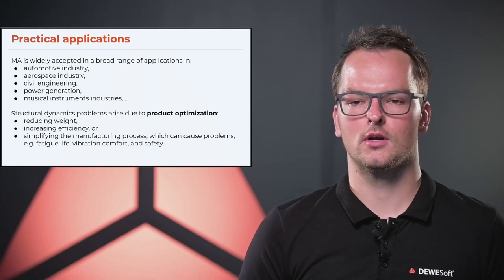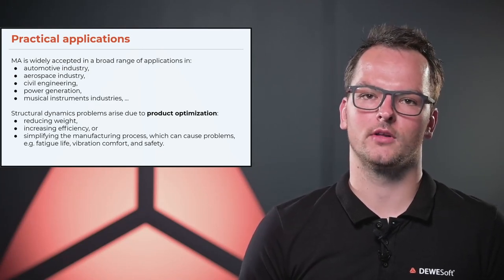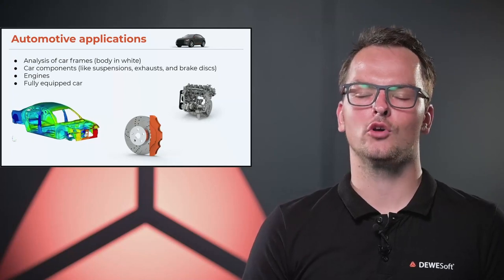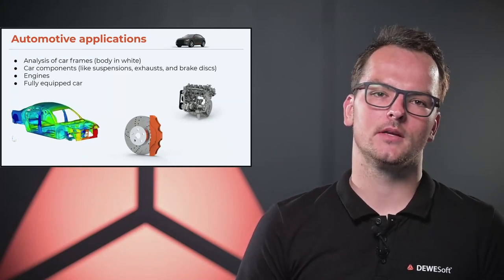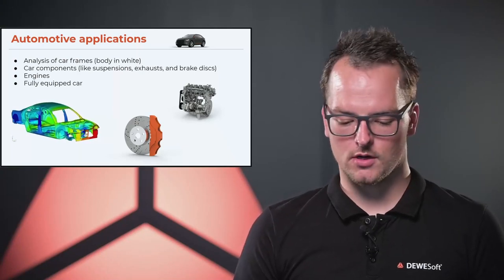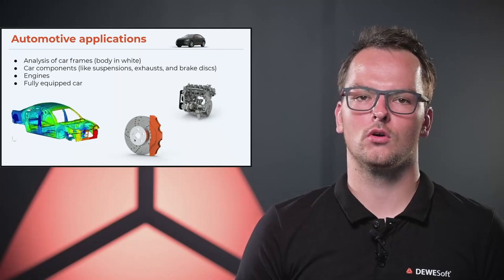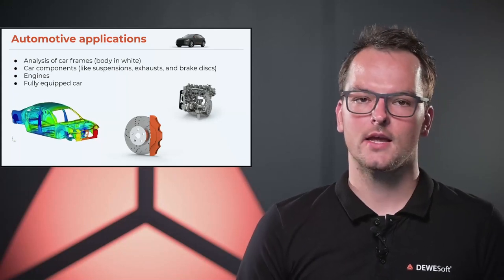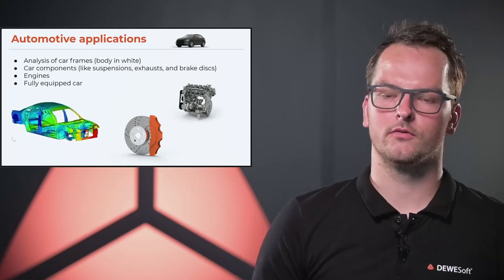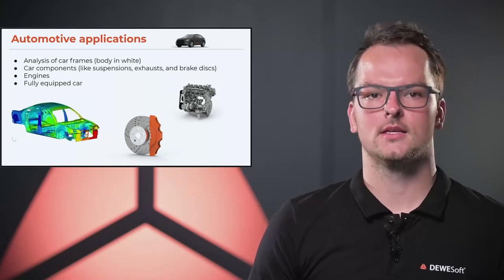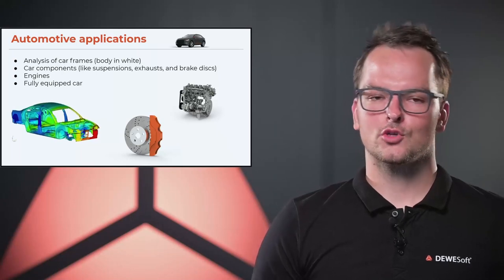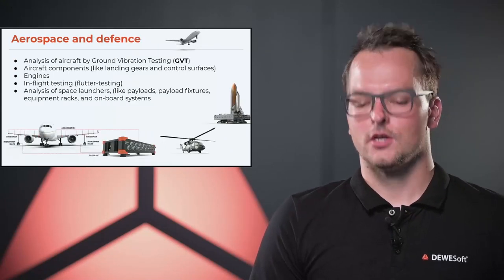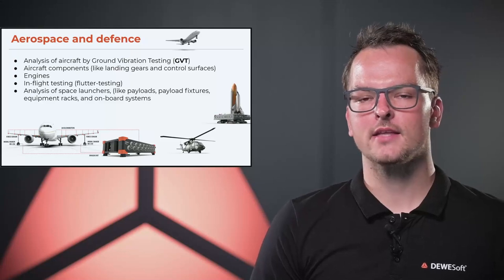They need to make sure that the product is compliant with standards or with the intended use. Going into each application more deeply — for example, in automotive, modal analysis is used on car frames where the customer places accelerometers all around the frame, excites it with a shaker, and then looks at how the structure behaves. They can also test each car component individually, from suspensions and exhausts to brake discs, engines, and fully equipped cars.